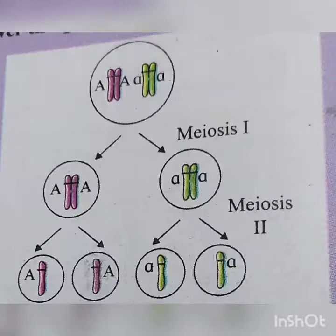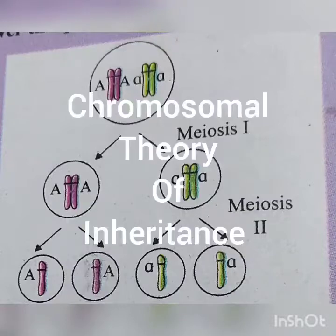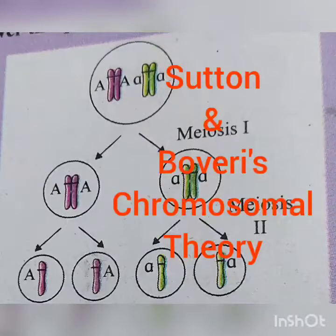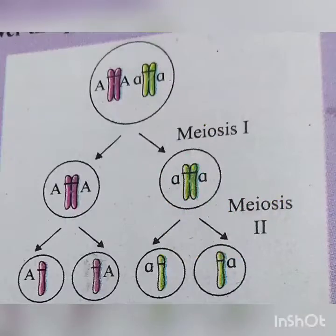Male and female gametes carry all hereditary characters and are the link between parents and offspring. Fusion of haploid male gamete and haploid female gamete restores the diploid number of chromosomes of the species. Chromosomes are the hereditary material, and genes are located on chromosomes in a linear manner. The position of a gene on a chromosome is called its locus.